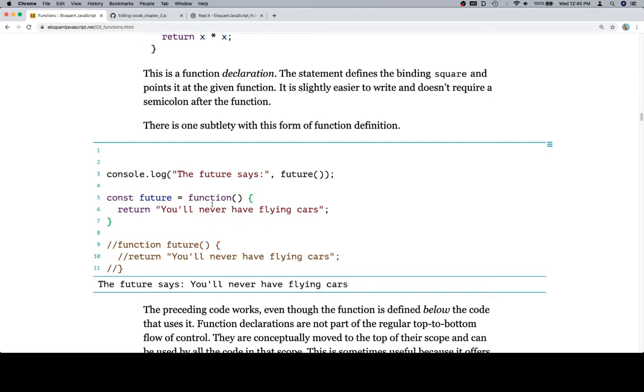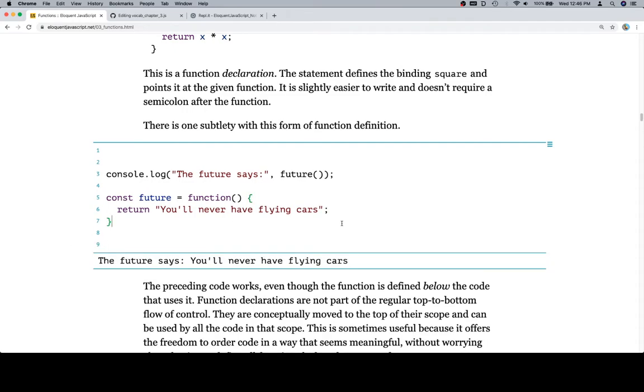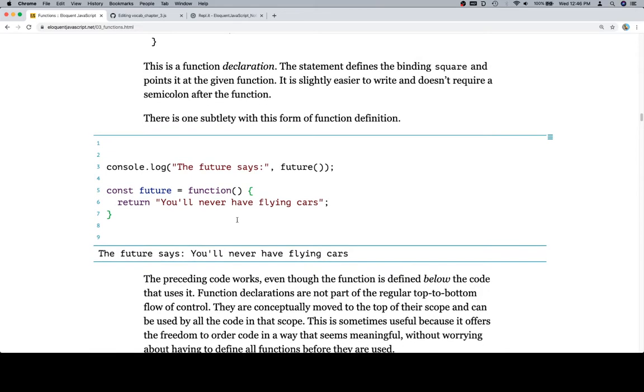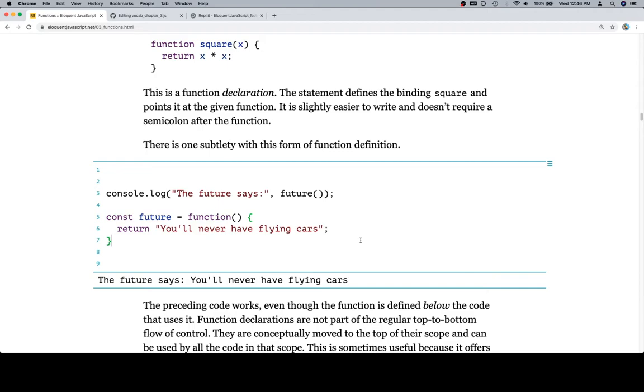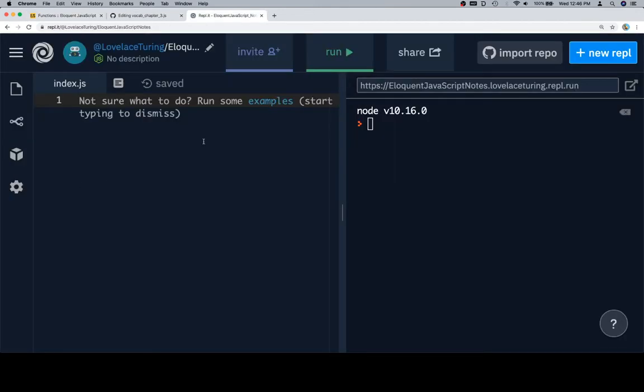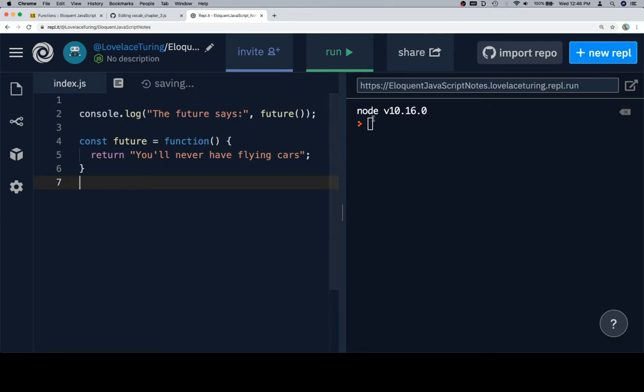Well, go on then. Hmm. Future, future, function, function. Return, you'll never have flying cars. Now let's get rid of all this. Am I not hitting the right enter button? Run code. Interesting. I wonder why it's doing that. Well, if there was ever a time for replit, it's right now. So let's go ahead and take this over to replit. We'll paste in here, and I'm going to hit run.